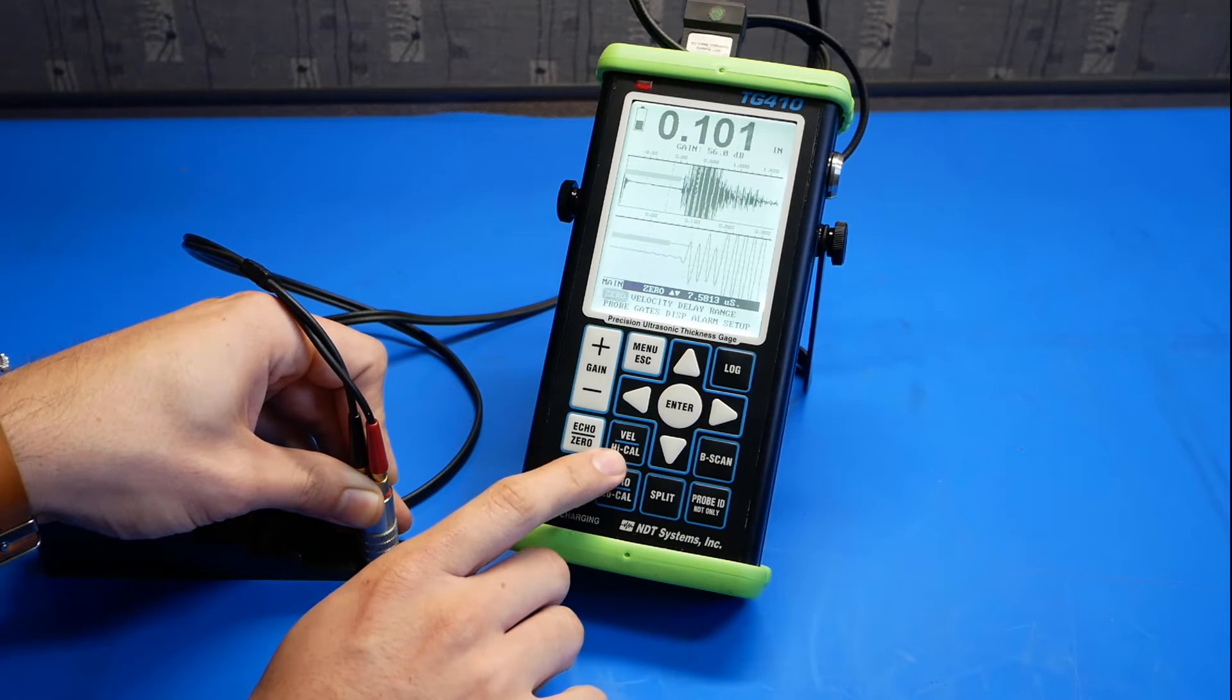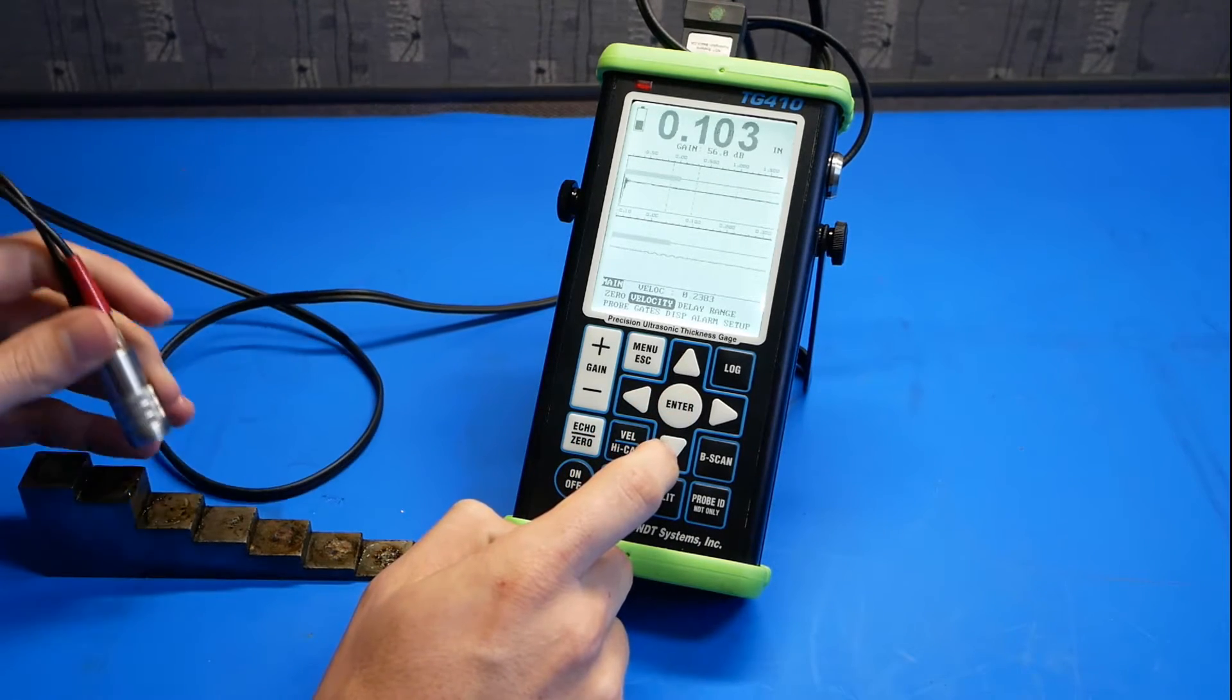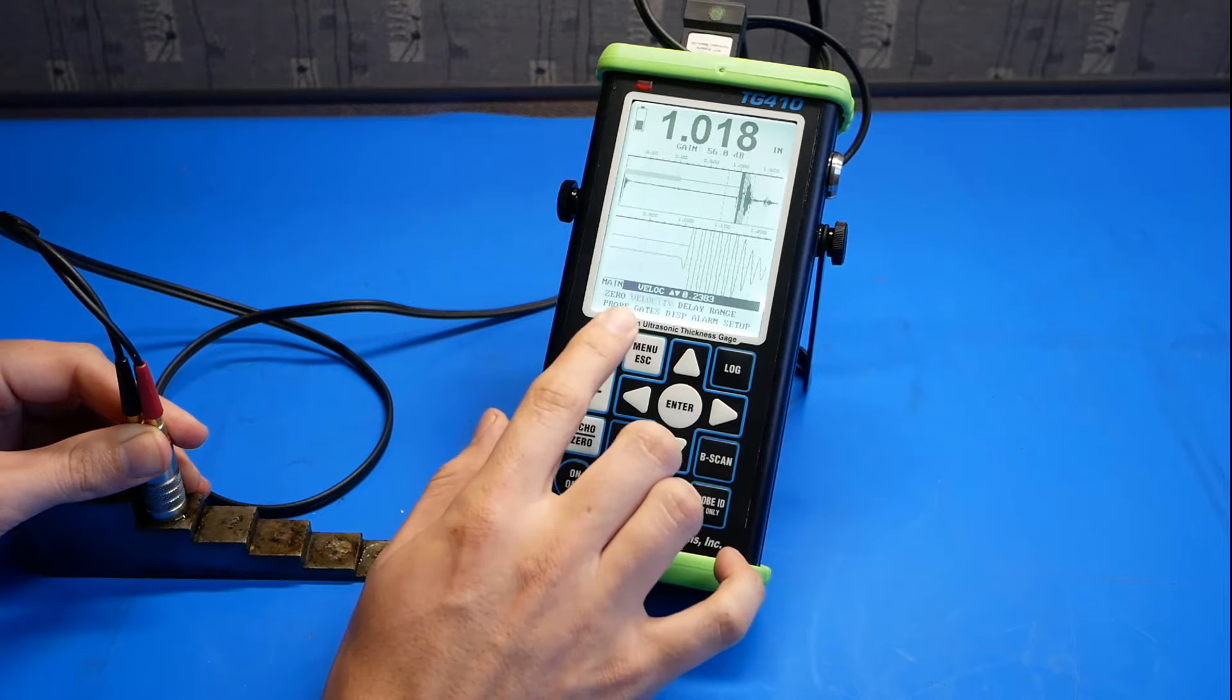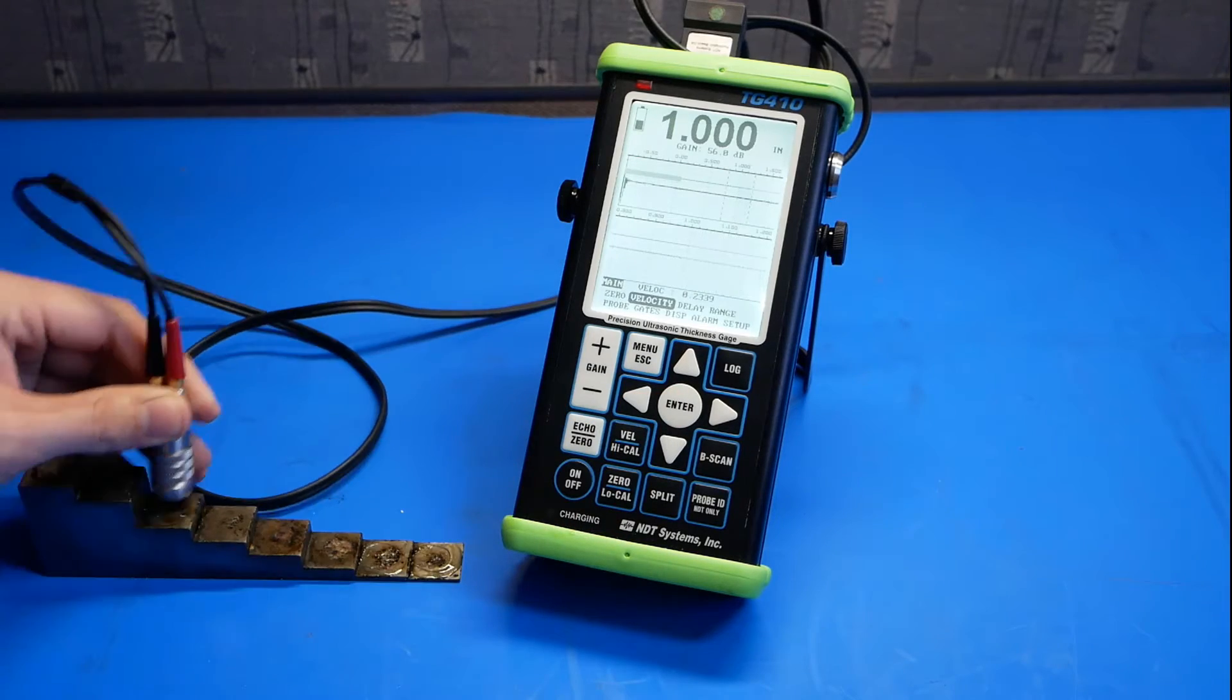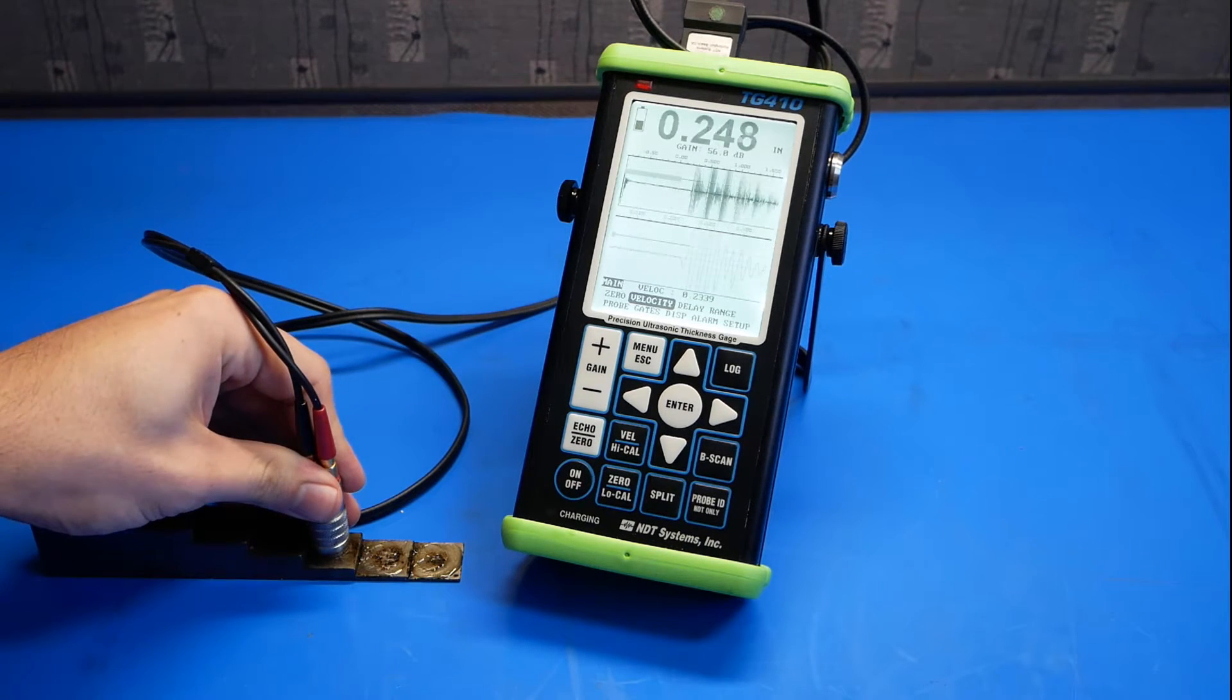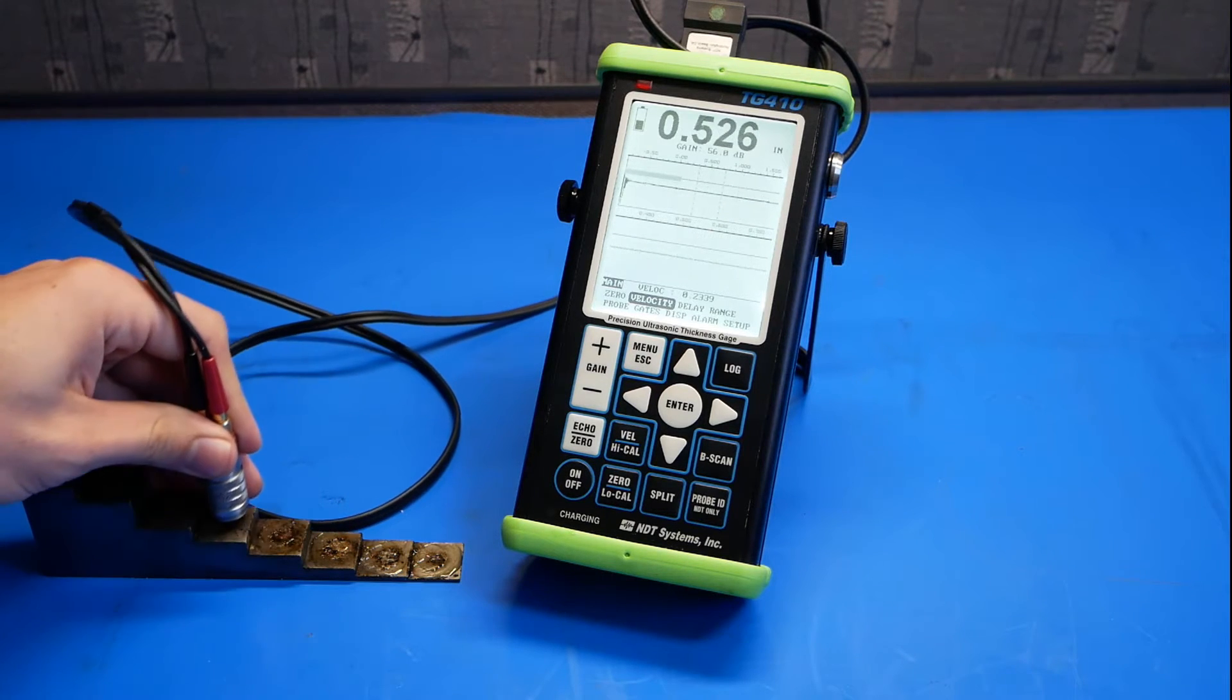Next, go to the velocity high cal button. Push enter, and go ahead and couple it to a high thickness region. In this case, 1 inch. We're going to adjust our velocity until our gauge reads 1 inch. Going back to the low thickness, we can see that the readings are within tolerance as we increment thickness along the step wedge.